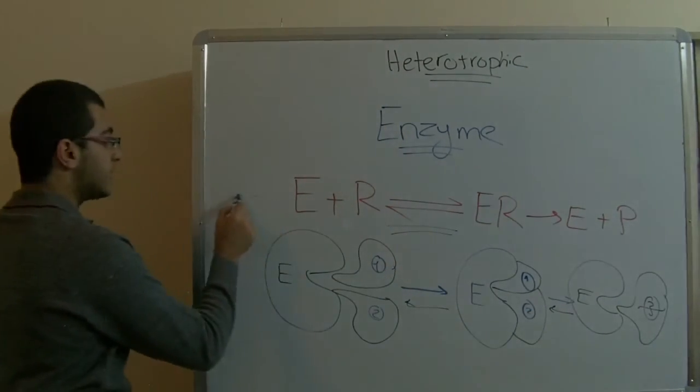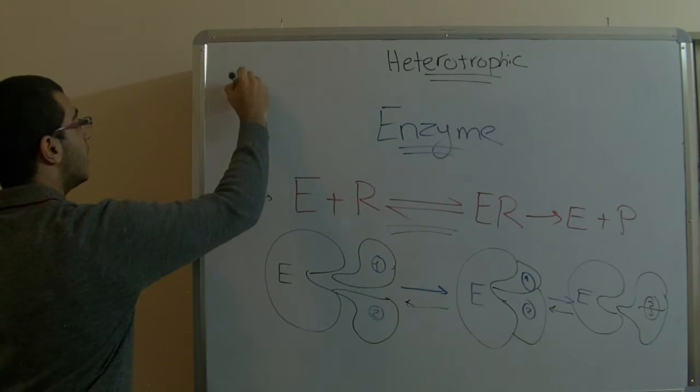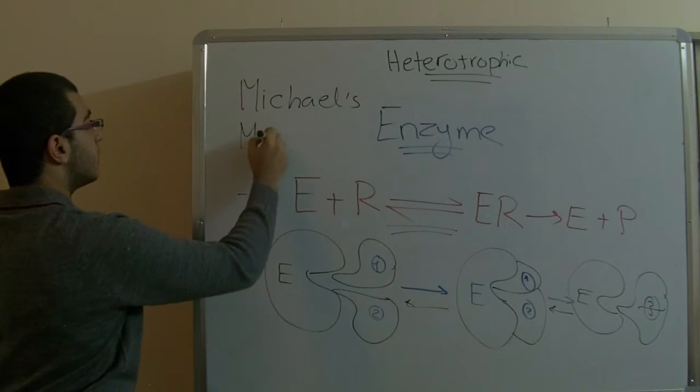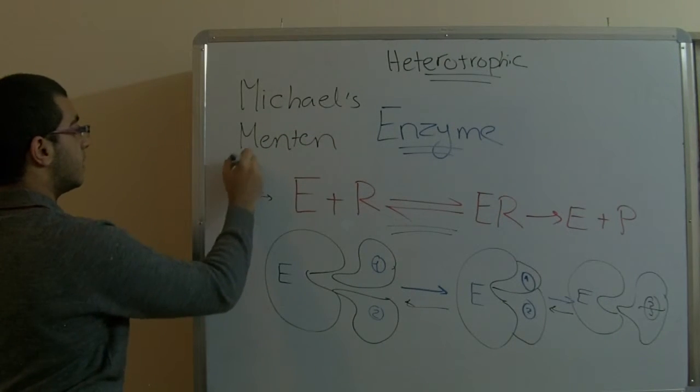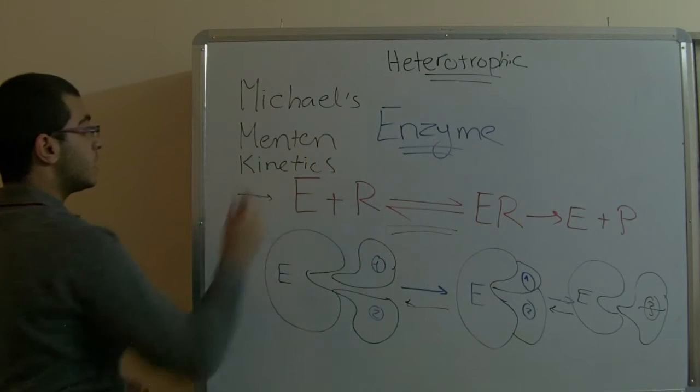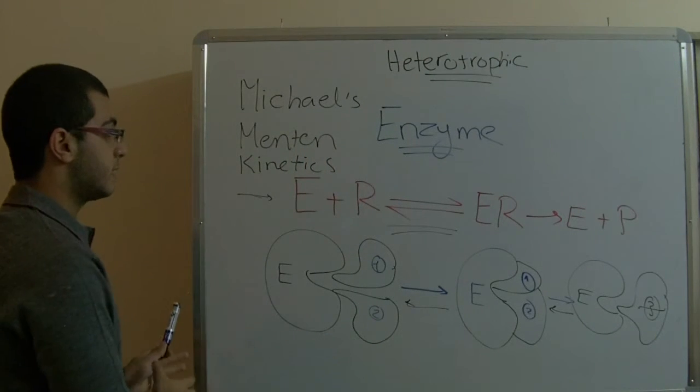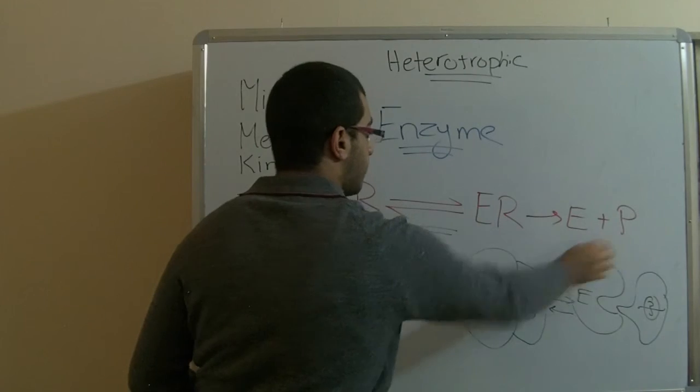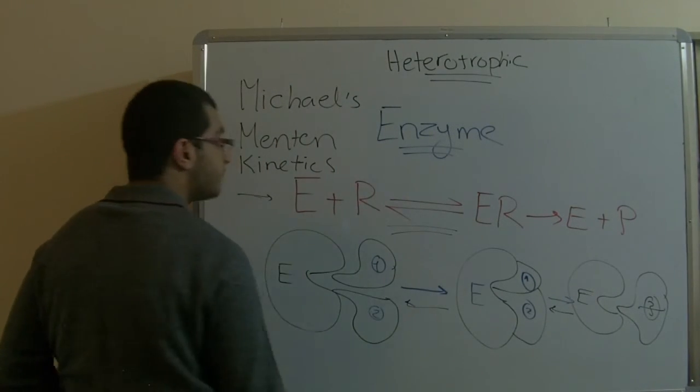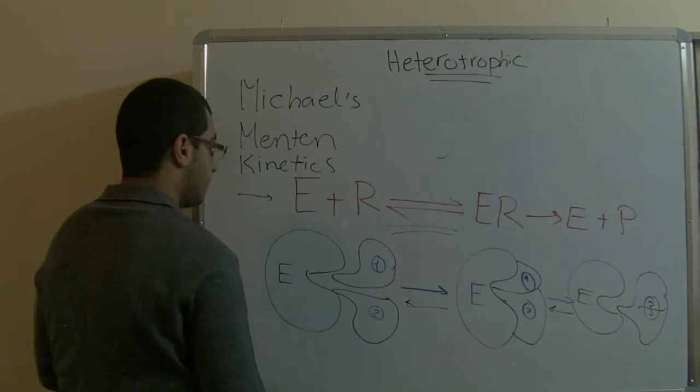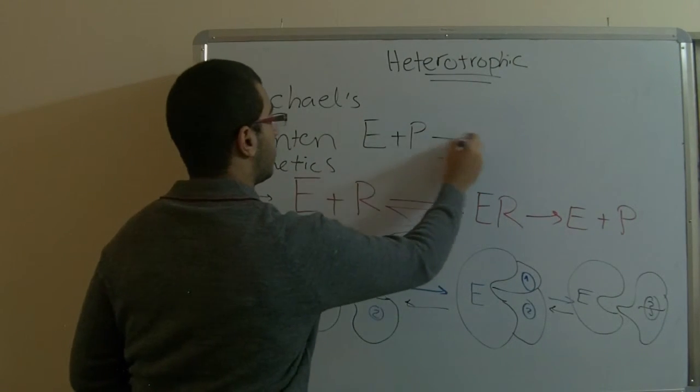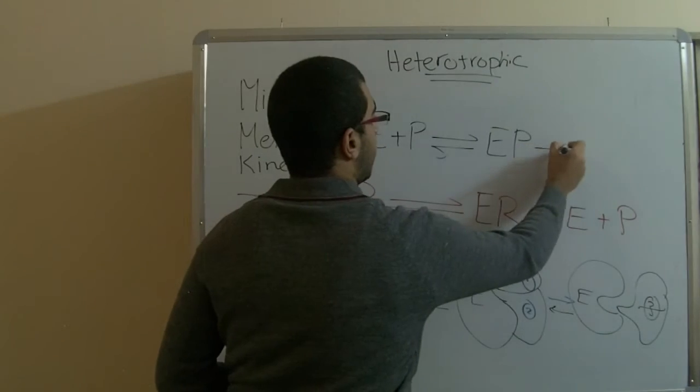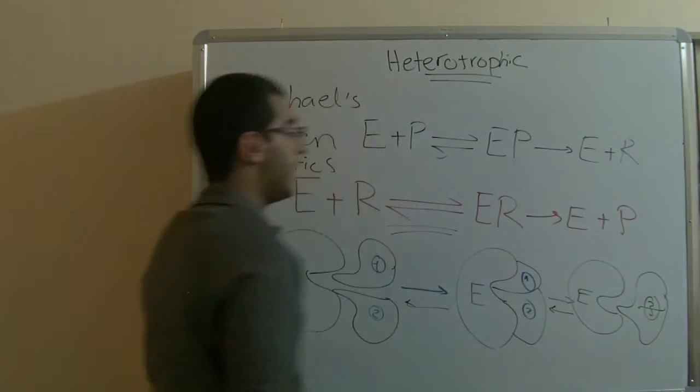We have written the formula this way because it depends on a law which is called Michaelis-Menten kinetics. It's something that belongs to physics and we have to write it only this way. If we want to write the equation of the enzyme plus the products, we can type it like this: enzyme plus product with a reversible line to give the intermediate unstable compound, and at last it gives rise to the enzyme plus the reactants.